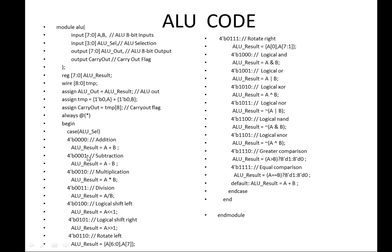Depending on the select value: if ALU select is 0 (4'b0000), it performs addition A plus B; if 0 0 1, it performs subtraction A minus B; similarly 1 0 for multiplication, 1 0 1 for division, then logical shift left, and logical shift right.